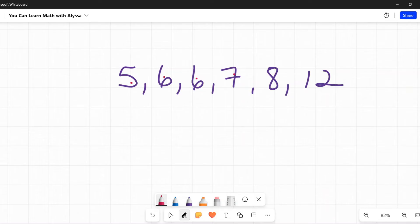And last but not least, the range. The range is what is the difference between the highest and the lowest value in this data set. Five is my lowest number here. Twelve is my highest. So to find the difference, I say 12 minus five. My range is seven.